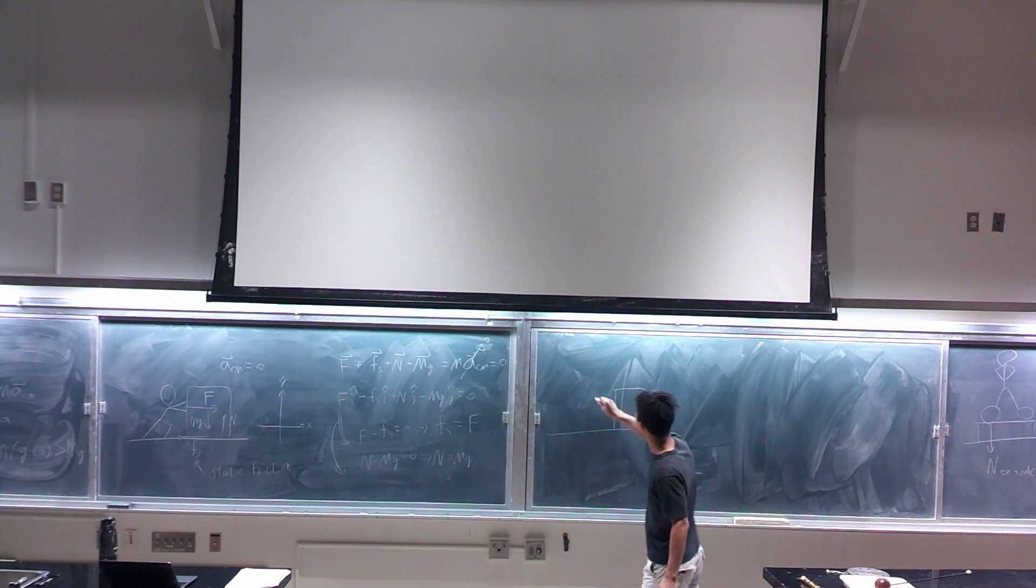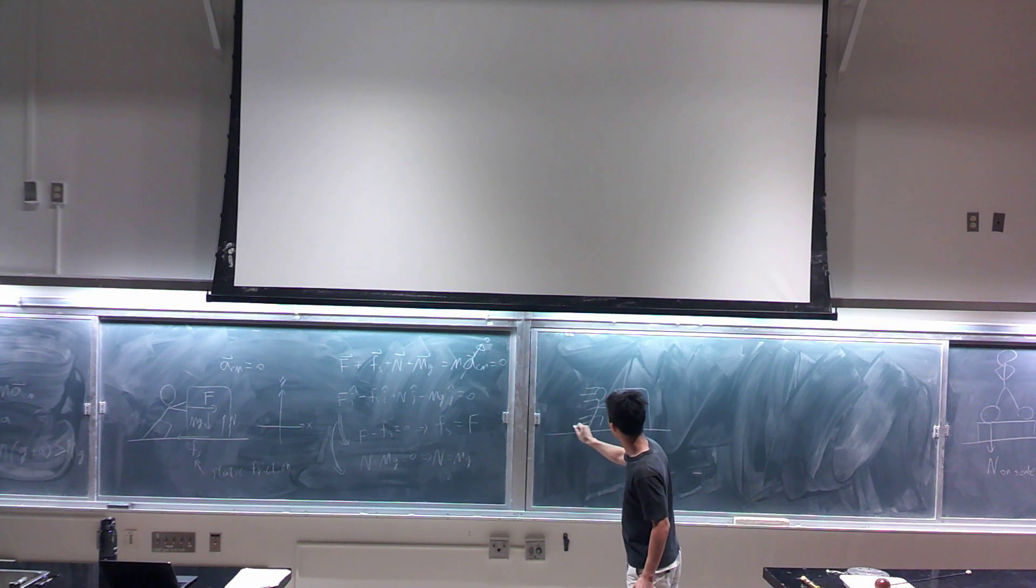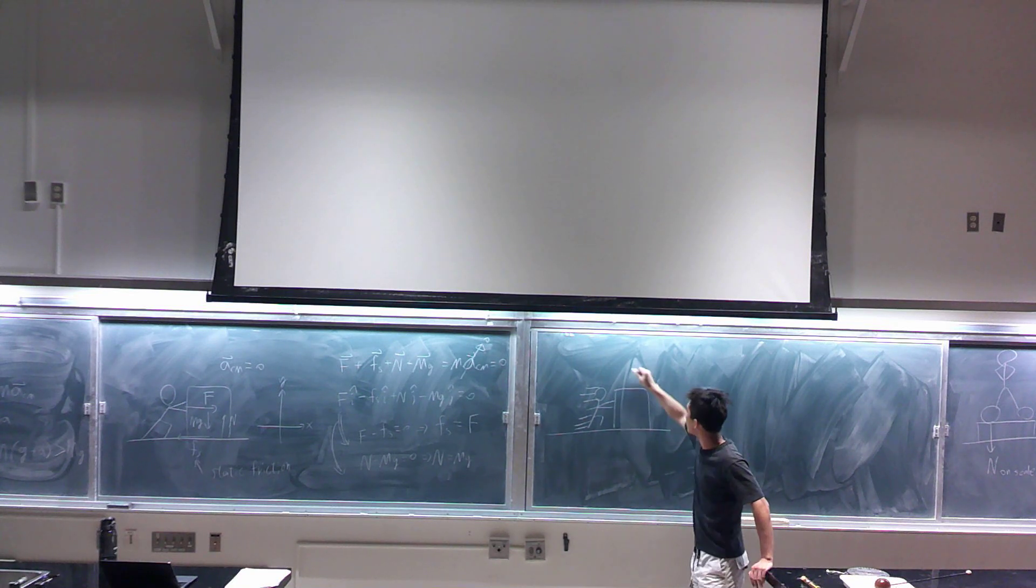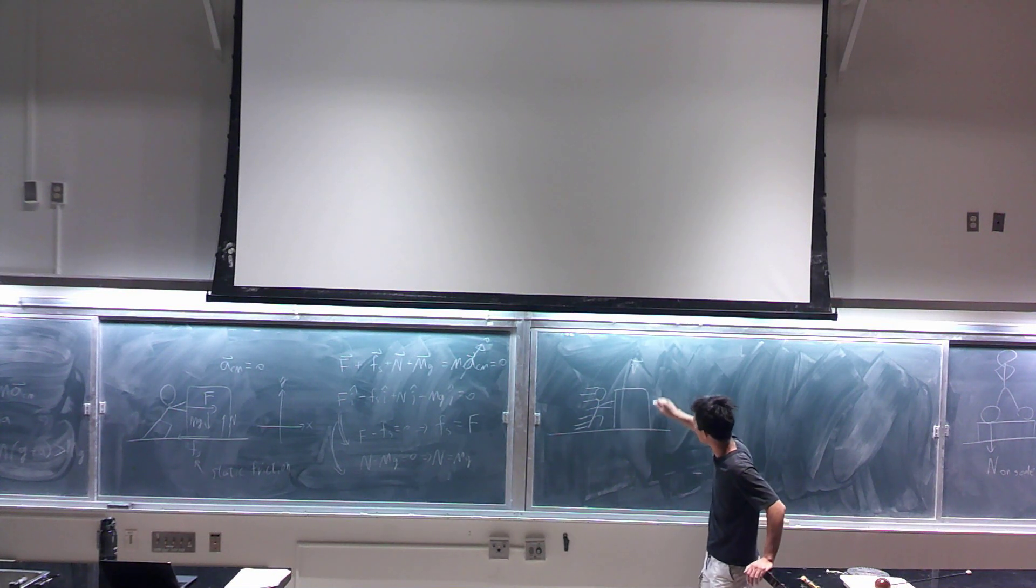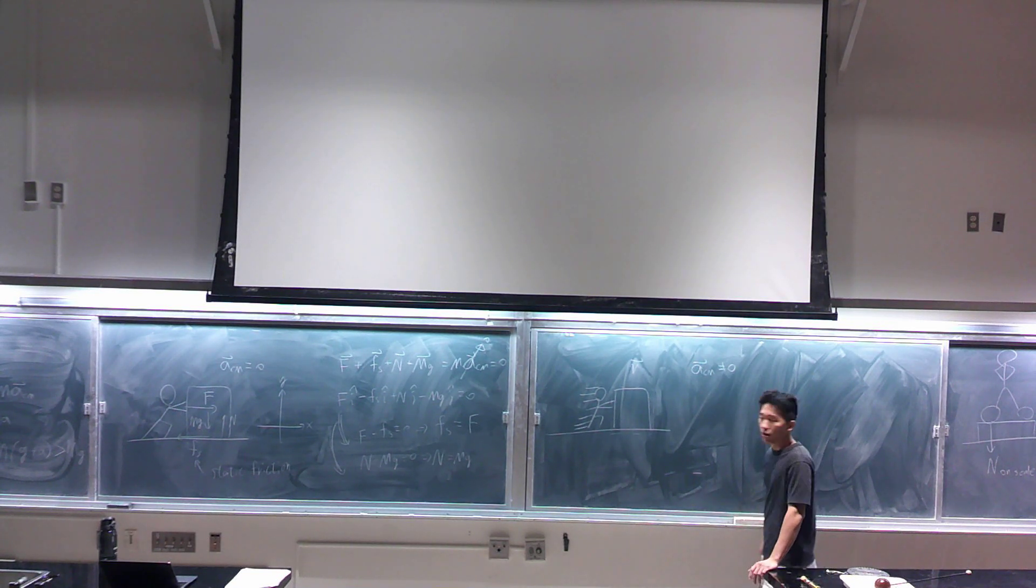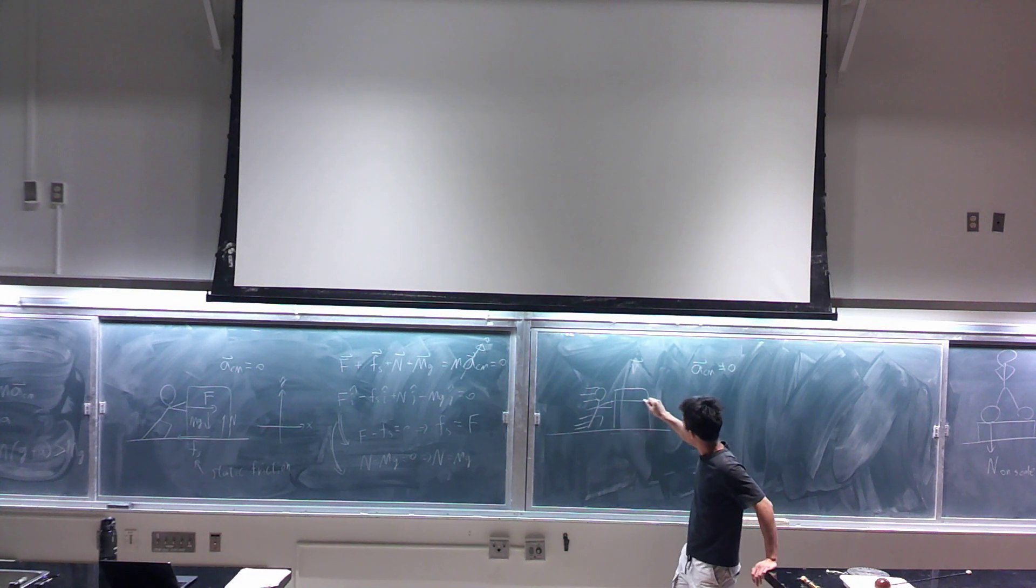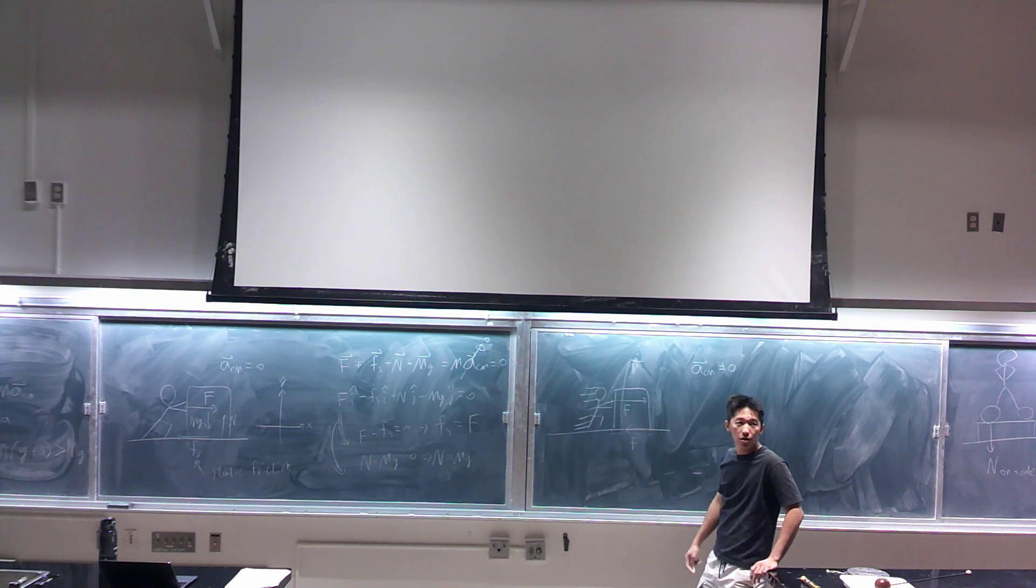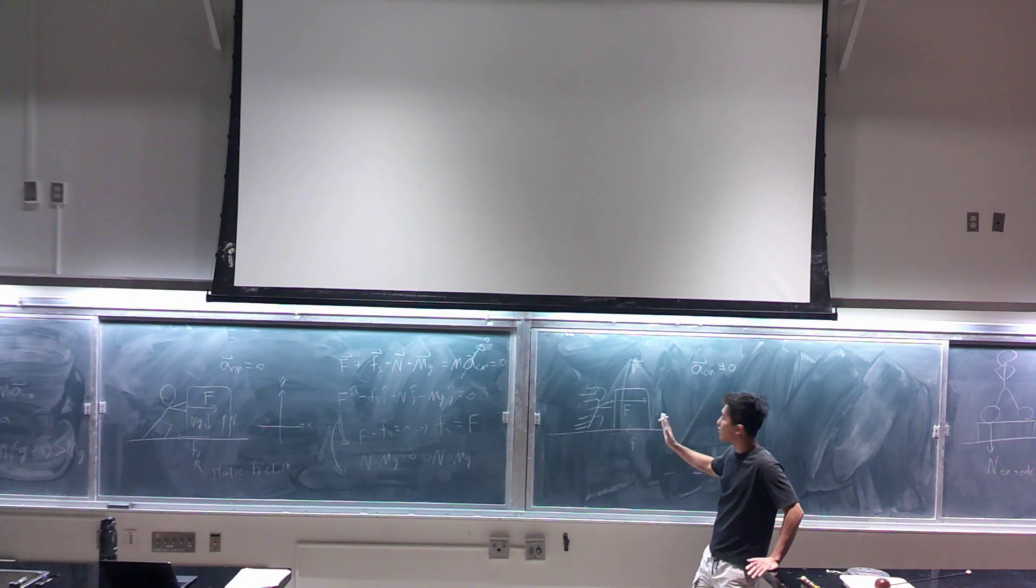When the thing is sliding, I draw some line indicating I'm sliding, so there is velocity. Because the thing is sliding, if I take my block as the system, it can have a center of mass acceleration. In this case, the force that I push the block does not need to be the same as the friction because the acceleration doesn't need to be zero.